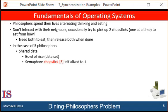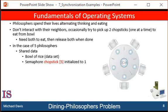Let's consider five philosophers who spend their lives thinking and eating. The philosophers share a circular table, surrounded by five chairs, each belonging to one philosopher. In the center of the table is a bowl of rice, and the table is laid with five single chopsticks, as shown here.